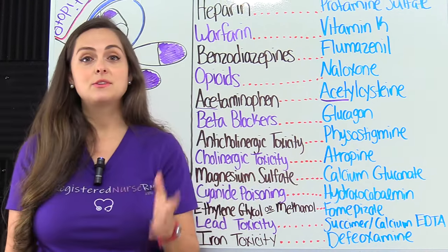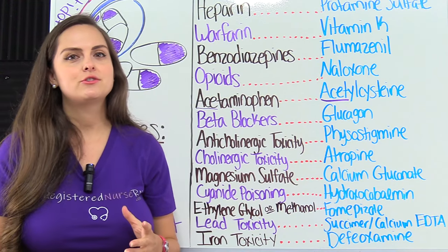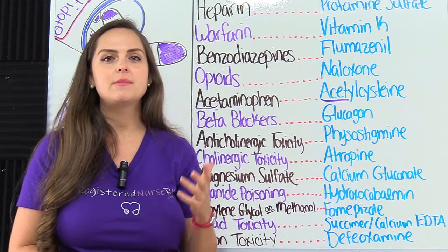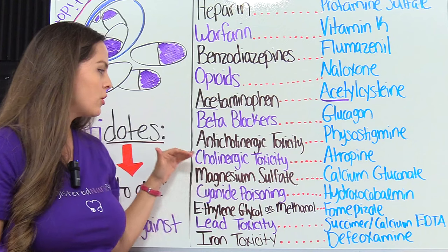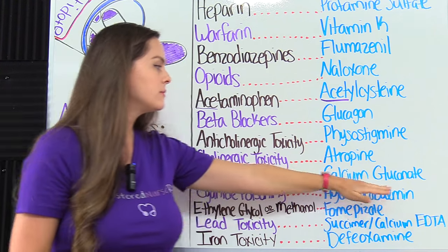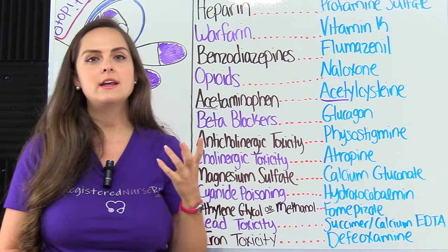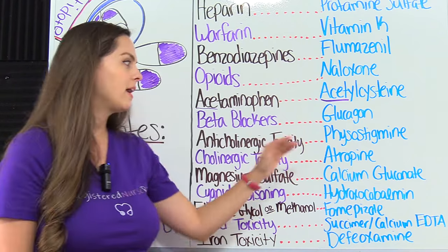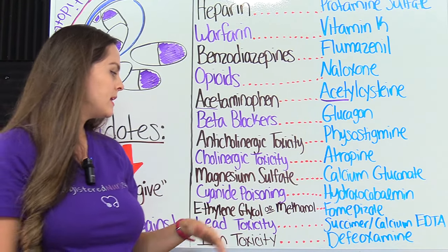Then we have magnesium sulfate. We talked a lot about this drug in our OB lectures when we discussed preeclampsia. The antidote for magnesium sulfate is calcium gluconate. If you plan on working in OB, I would definitely remember that antidote.